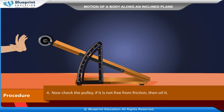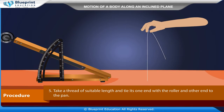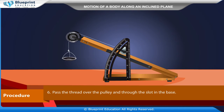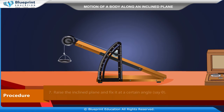Check the pulley. If it is not free from friction, oil it. Take a thread of suitable length and tie one end to the roller and the other end to the pan. Pass the thread over the pulley and through the slot in the base. Raise the inclined plane and fix it at a certain angle θ.